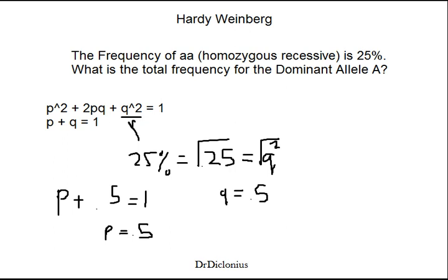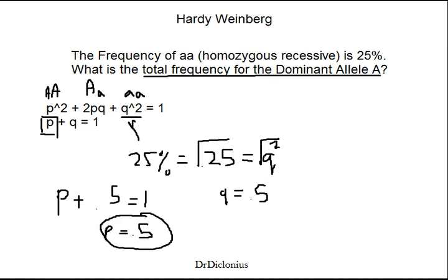Now, how do we know this is what we're solving for? P represents the dominant allele. P squared represents AA, the frequency of AA. 2PQ represents the frequency Aa, and Q squared represents the frequency aa. Since we're solving for the total frequency for the dominant allele A, that is P. Therefore, P is 0.5.